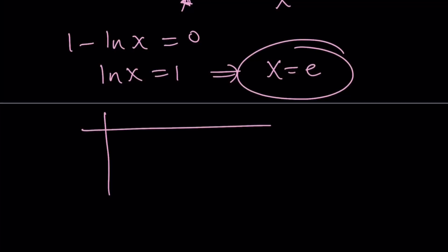And our table is going to have the following rows. This is going to be x, this is going to be f prime, and this is going to be f. And my goal is to find out the intervals on which our function is increasing and decreasing. Since e is the critical value, it sets the derivative equal to 0.